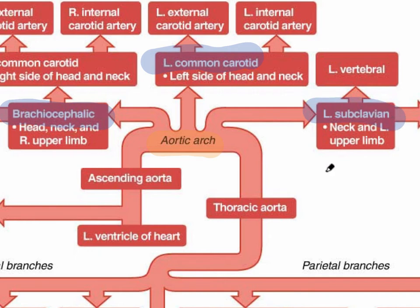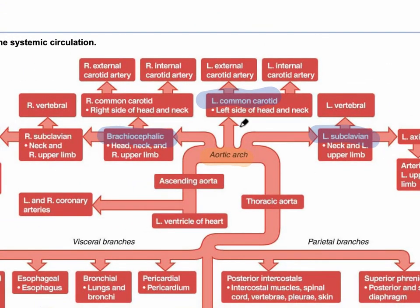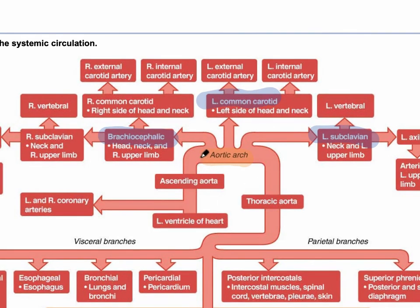The great thing about this flowchart is it tells you the areas of tissue that each artery brings oxygen and nutrients towards. The left common carotid goes up towards the brain. The brachiocephalic trunk leads to the right common carotid, which then splits into the right external carotid artery and the right internal carotid artery. After making this turn, the aorta then descends.